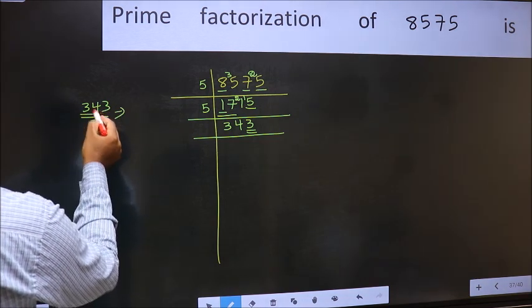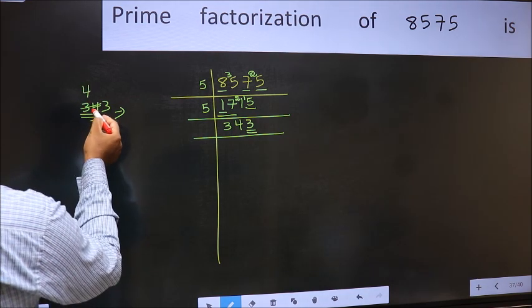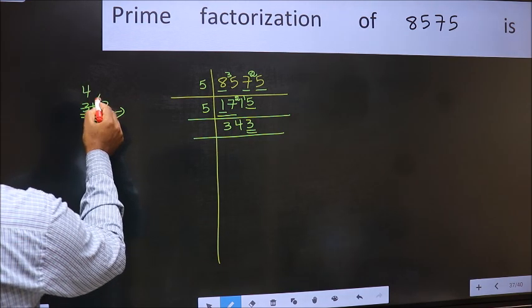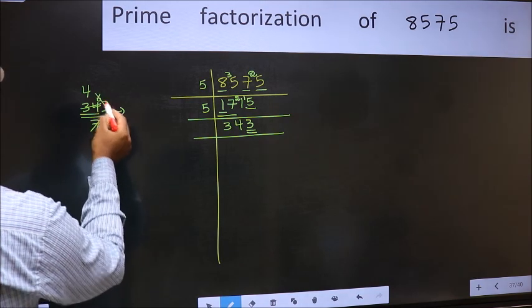A number close to 34 in 7 table is 7×4, 28. 34-28, 6, carried forward 63. When do we get 63 in 7 table? 7×9, 63.